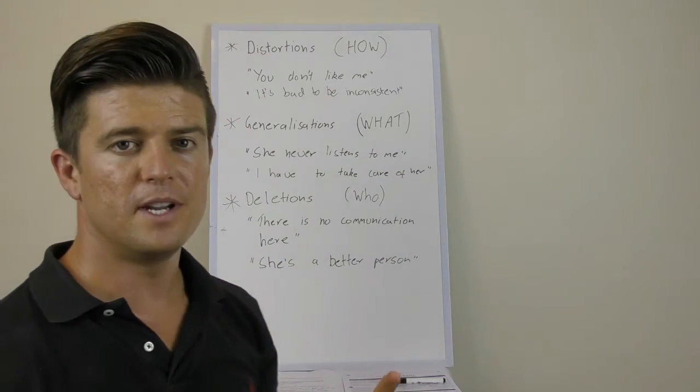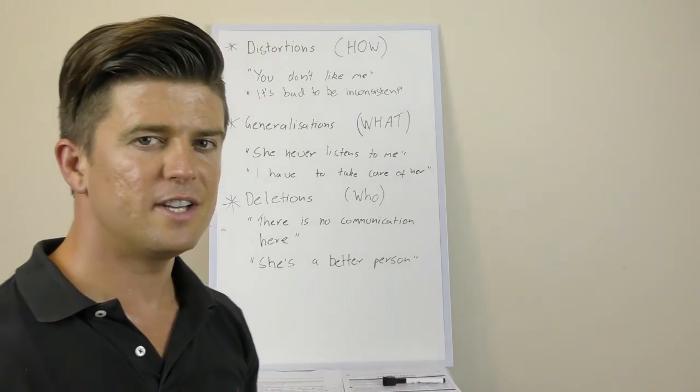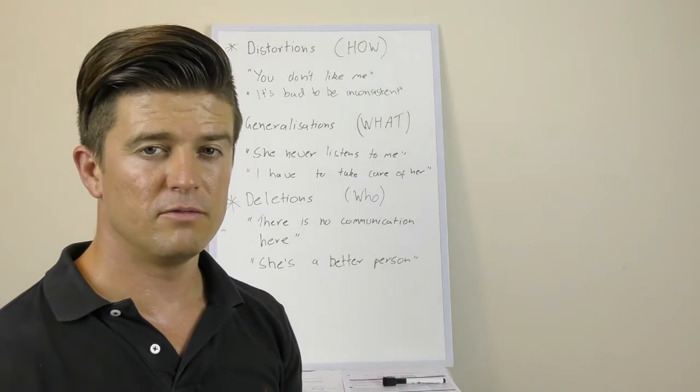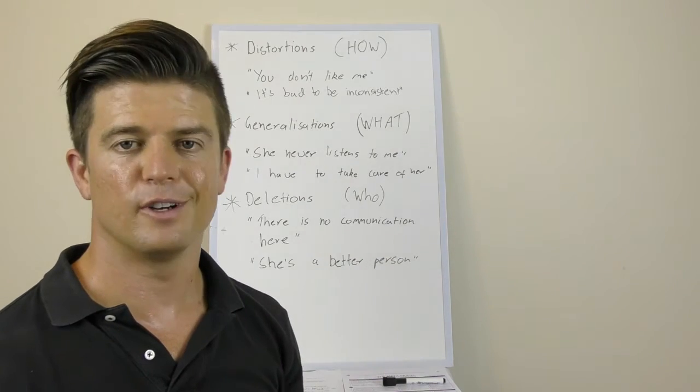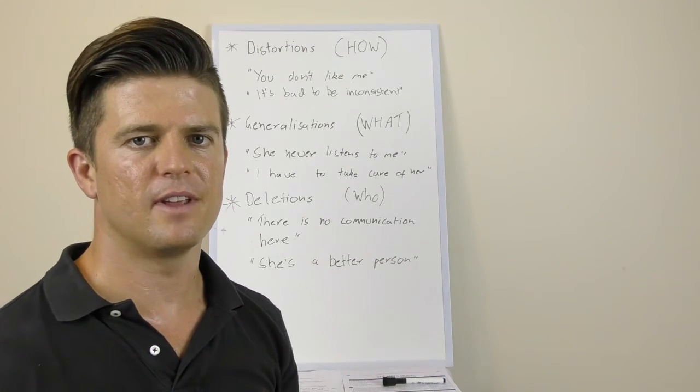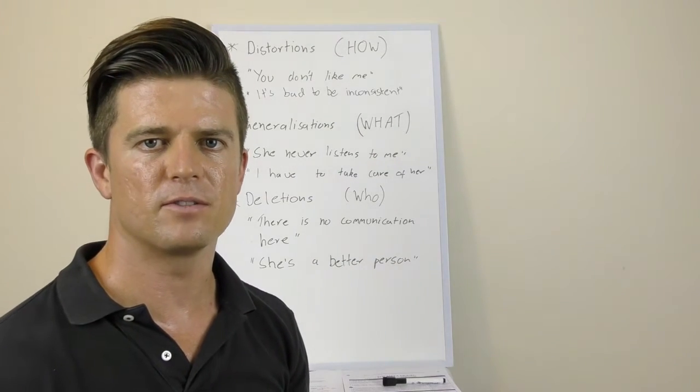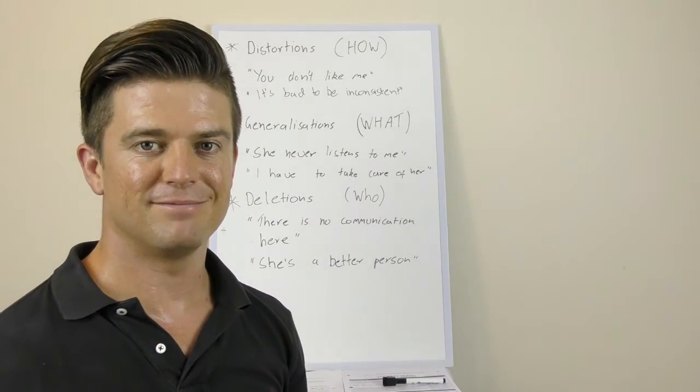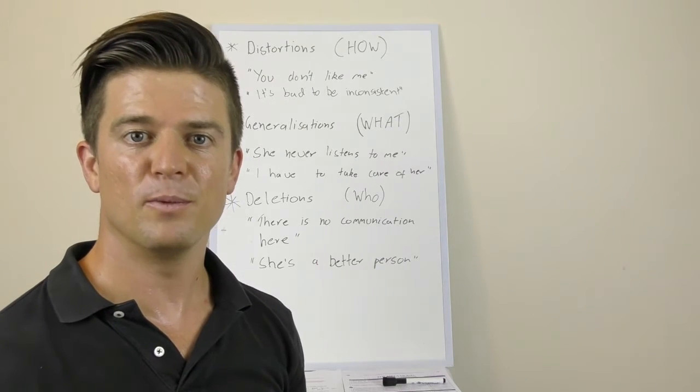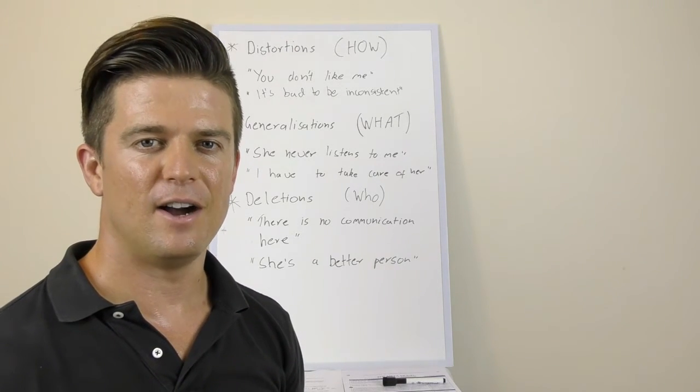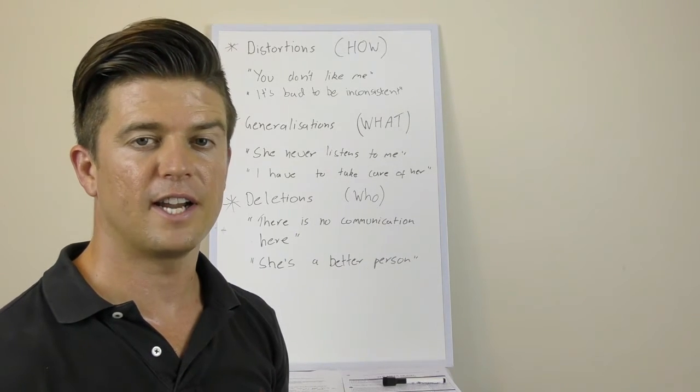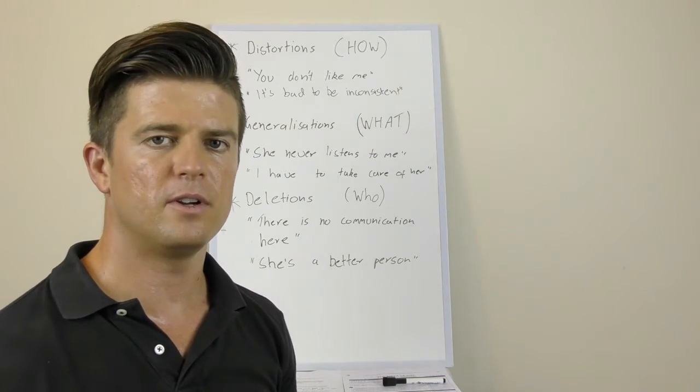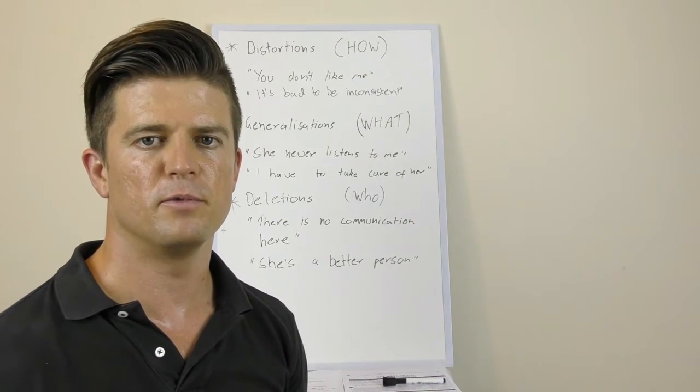Generalizations, an example would be she never listens to me. So generalizations are things like never, always, everyone, no one, sort of really definitive, I guess absolute language is probably a better way to describe it, so it's either all or none. So for example she never listens to me, first response might be never, because I'm sure she's listened to you once otherwise how did you ever have any communication. And then what you can do is you can flip it around and you can offer a counter. So it might be what would happen if she did listen to you. So that way when you offer a counter and you're able to get that person's response again we can get more information so we can give a more informed response back to them.